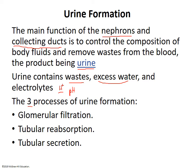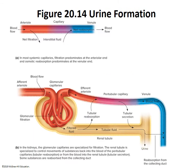The three processes in forming urine are: glomerular filtration, which happens in the glomerulus; tubular reabsorption, where things filtered that we don't want to lose get pulled back into the circulatory system; and tubular secretion, where things that couldn't get filtered but need to be excreted get pushed from the capillary bed into the tubule.